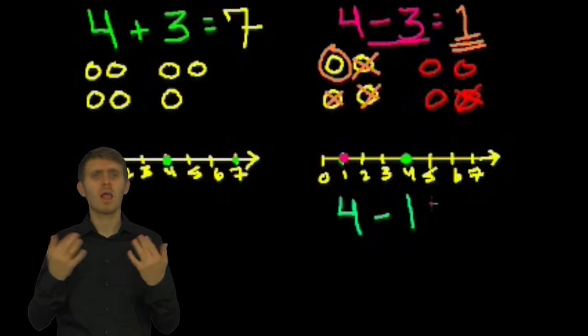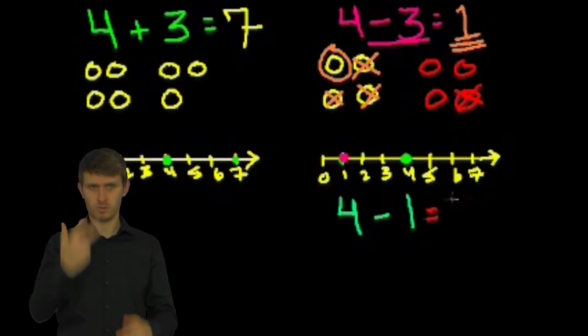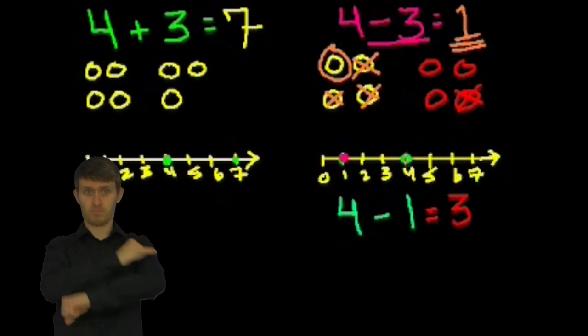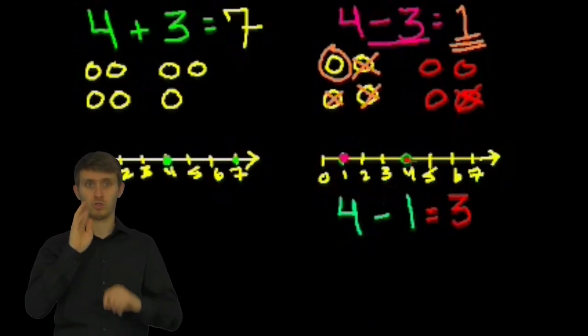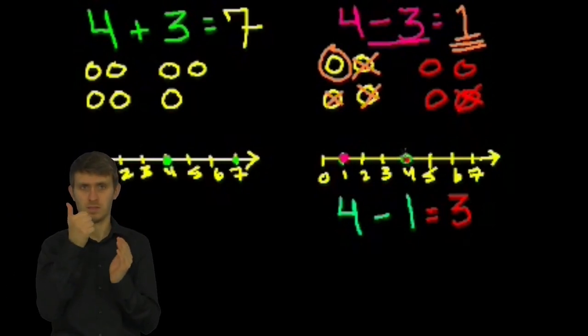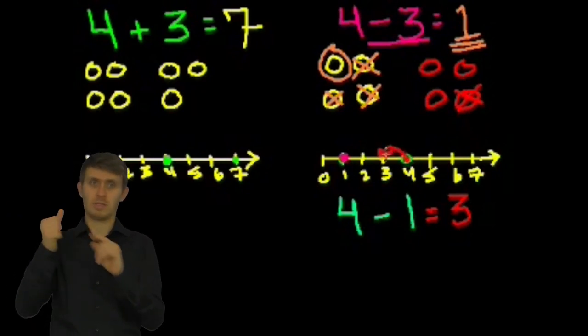So 1 of them were to go away. How many apples would I have left? Well, 3. 1, 2, 3. So 4 minus 1 is equal to 3. And if we did it on the number line, if we started at 4, and we subtracted 1, we took 1 away, so we're going to become 1 smaller, we go back 1, we get 3. Either way works.